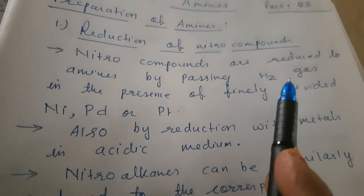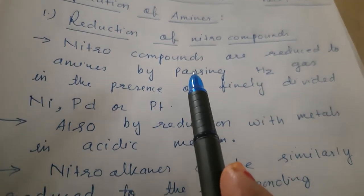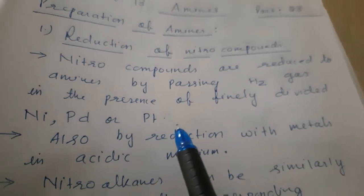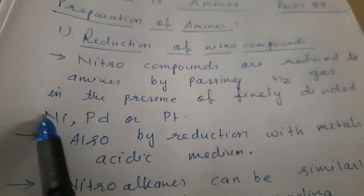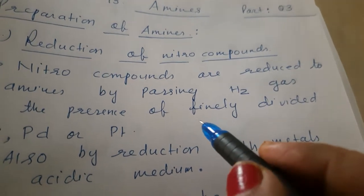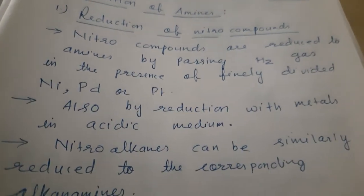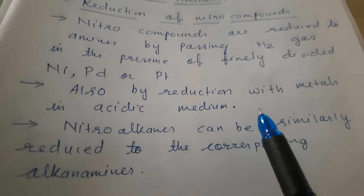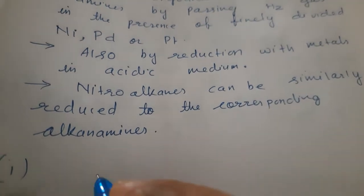Reduction of Nitro Compounds will give the Amines. Nitro Compounds are reduced to Amines by passing Hydrogen Gas in presence of Finely Divided Platinum, Nickel or Palladium. Finely Divided powders are used. Also, by reduction with metals in acidic medium, Amines are produced. Nitro Alkanes can be similarly reduced to corresponding Alkane Amines. Let us see the examples here.